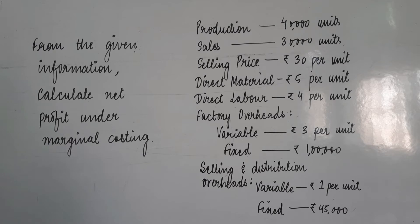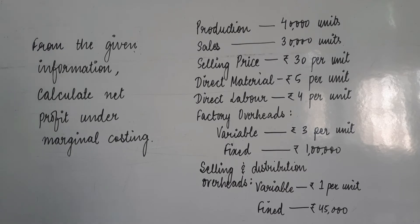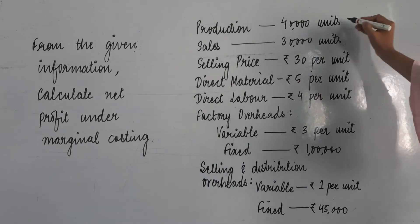The question says: from the given information, calculate net profit under marginal costing. We have production 40,000 units and sales 30,000 units. Matlab humne produce toh us particular year mein 40,000 kiye the, but humne beche usmein se sirf 30,000 hai. That means baqi ke 10,000 units humara closing stock hai.